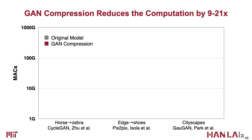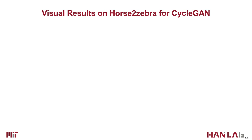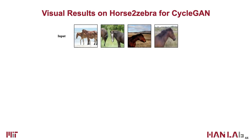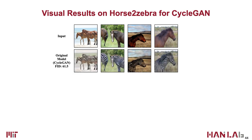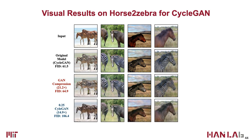With GAN Compression, we manage to reduce the computation of CycleGAN, Pix2Pix, and GauGAN by 9 to 21 times while retaining the model performance. Here we show some visual results of GAN Compression on CycleGAN for the horse-to-zebra dataset. The input horse images and the zebra photos are from the original CycleGAN. With our GAN Compression, we reduce the computation by 21.2 times while preserving visual fidelity. However, if we directly shrink 75% of channels, the image quality degrades sharply — the stripes of zebras fade away.